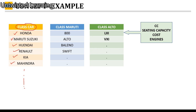If the focus is on Maruti only, you can create a class Maruti with multiple objects like 800, Alto, Baleno, Swift, and so on. If your focus is only on the Alto car, you have a class called Alto, and then various models like Lxi, Vxi, Vdi can be the objects of this class.